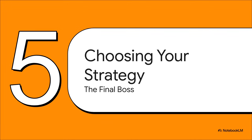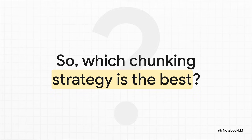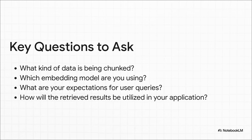With all these options, from the super simple to the really sophisticated, how do you pick the right one? You're probably asking which strategy is the best, and the honest answer is: there isn't one. There's no single best strategy — the right choice depends completely on your specific needs. What works for a chatbot analyzing dense legal contracts will be totally different from one searching through customer product reviews. To find your optimal strategy, you have to answer four critical questions about your data, your models, and your app: What kind of data are you chunking — clean articles or messy web pages? Is your embedding model built for short sentences or longer paragraphs? Are your users asking simple questions or really complex multi-part ones? The answers will point you in the right direction.